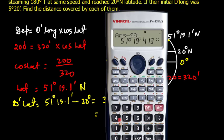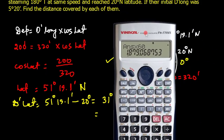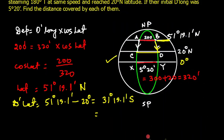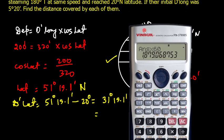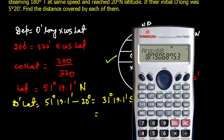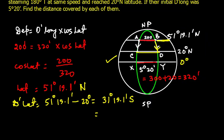Converting D.Lat to distance: 31°19.1' minus 20° gives approximately 31.318°, and multiplying by 60 gives 1879 minutes. Therefore the distance covered by each ship is 1879 nautical miles.